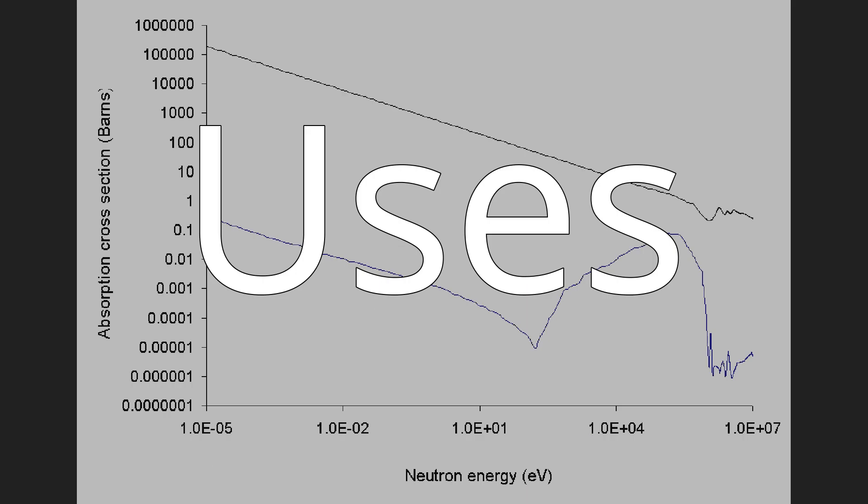Neutron activation analysis can be used to remotely detect the chemical composition of materials. This is because different elements release different characteristic radiation when they absorb neutrons. This makes it useful in many fields related to mineral exploration and security.